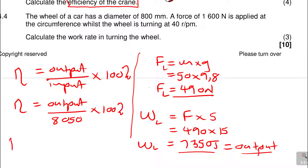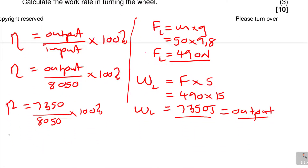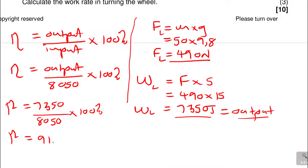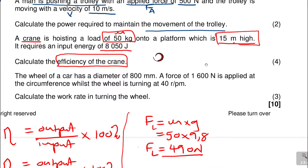Now I come to the efficiency calculation: efficiency equals output over input, which is 7,350 over 8,050, multiplied by 100%. Using a calculator: 7,350 divided by 8,050 times 100 gives 91.30%. So the efficiency is 91.30% — not bad, it's a very efficient crane because it's above 80%.